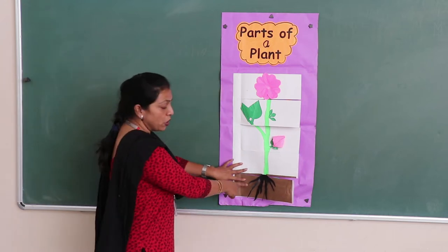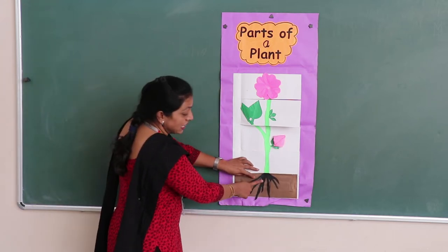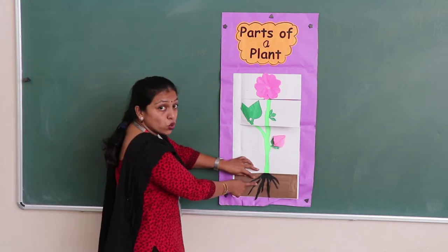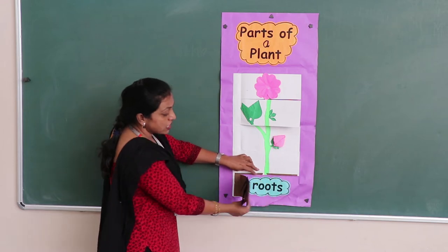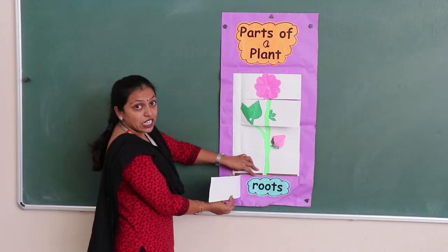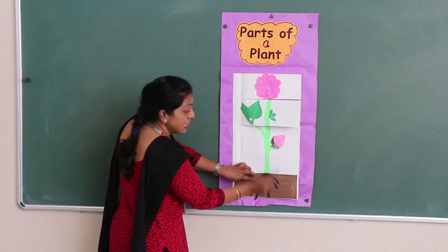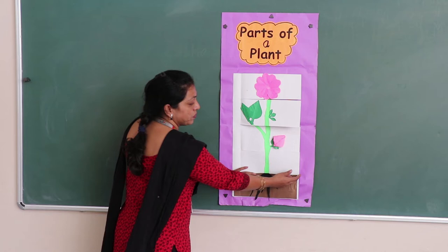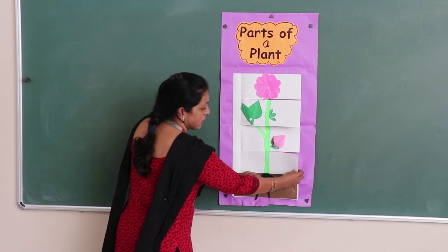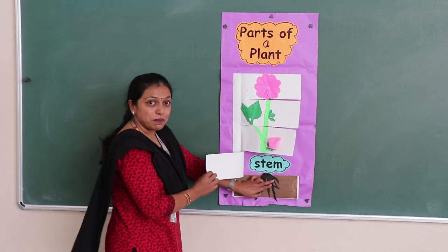We will start from below, right? These are the roots which are under the soil. Roots. Then grows the stem. This is a stem.